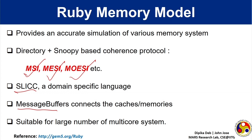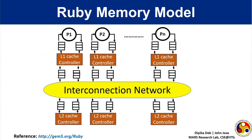Ruby is suitable for a larger multi-core system unlike classic memory. Hence, we will use the Ruby memory model in our GEM5 course. The figure shows an overview of the Ruby memory model. Here the processors are connected with L1 cache controllers with message buffers. Similarly, the L1 cache controllers are connected with the interconnection backbone using message buffers.